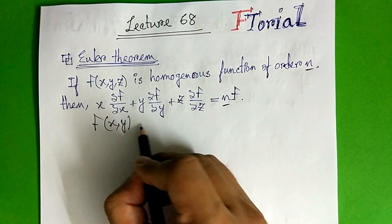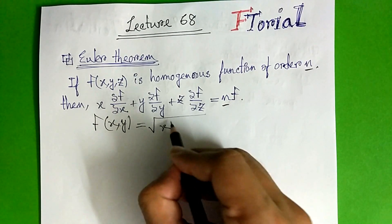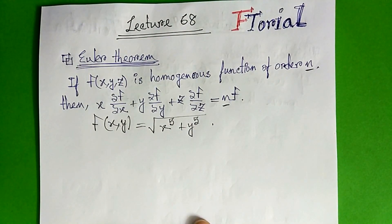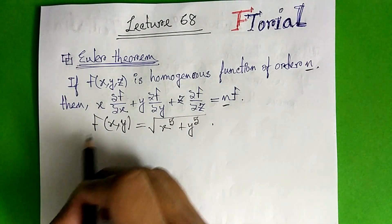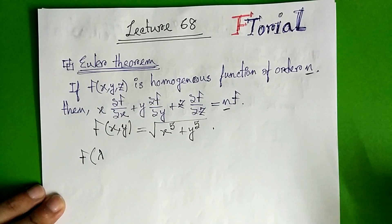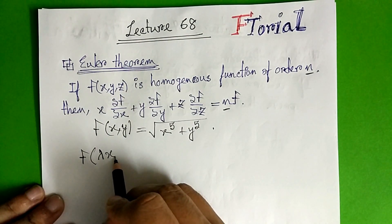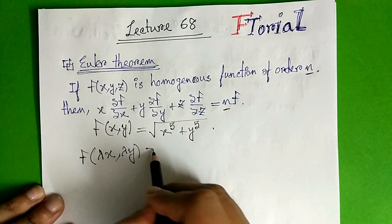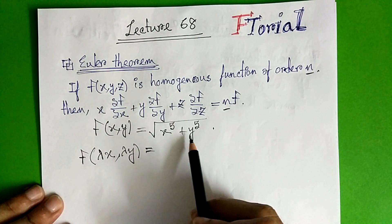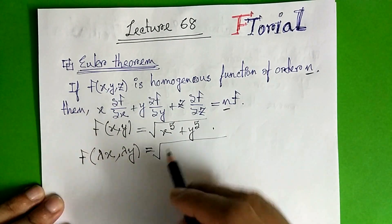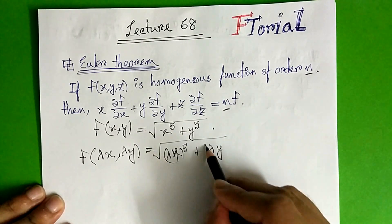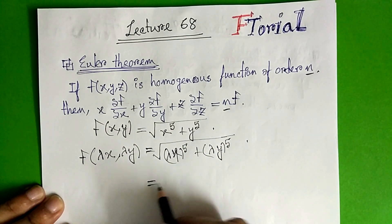xy is an easy example. So x to the power 5 plus y to the power 5. A function is homogeneous. So lambda, the integral x upon y. So x to the power 5 plus lambda y to the power 5. So it is easy to verify it is homogeneous.